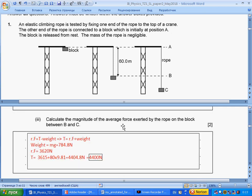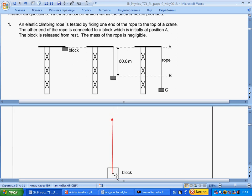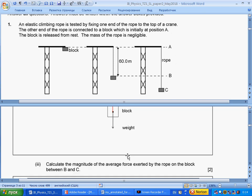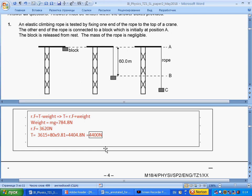Calculate the magnitude of average force exerted by the rope on the block between B and C. Tension minus weight gives us resultant force. So, resultant force equals tension minus weight. Therefore, tension will be resultant force plus weight. Weight equals mg, mass times g. This formula you should learn because it is not in the booklet. Then, using the fact the resultant force as we found in previous question is given, we find tension to three significant figures.